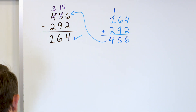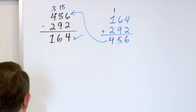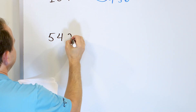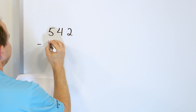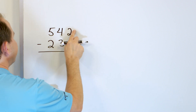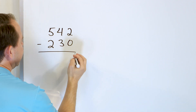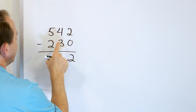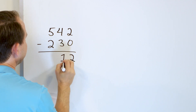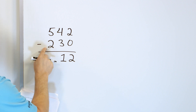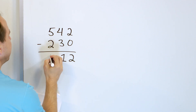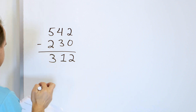What if we have 542 and we subtract from that 230? What is 2 minus 0? You don't take anything away — you have a 2 left. What is 4 minus 3? Start with 4, take away 3, you have 1 left. What is 5 minus 2? Just start with 5, go down to 4, then down to 3. So 5 minus 2 is 3. So we have an answer of 312.